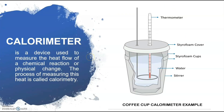A calorimeter is a device used to measure the heat flow of a chemical reaction or a physical change. The process of measuring this heat is called calorimetry. A basic calorimeter consists of a metal container of water above a combustion chamber, in which a thermometer is used to measure the change in water temperature. The basic principle is that heat released by the combustion chamber increases the temperature of the water in a measurable way. The temperature change may then be used to calculate the enthalpy change per mole of a substance when two substances A and B are reacted.